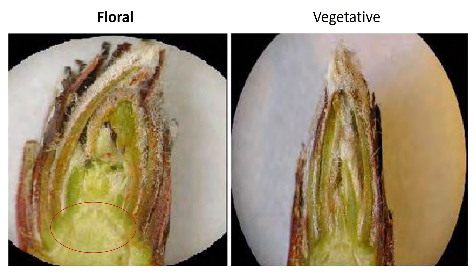Floral buds will have swollen meristem tissues, and you will see developing flowers growing off of this meristem. Vegetative buds will have a narrower meristem, and there will not be any developing flowers.